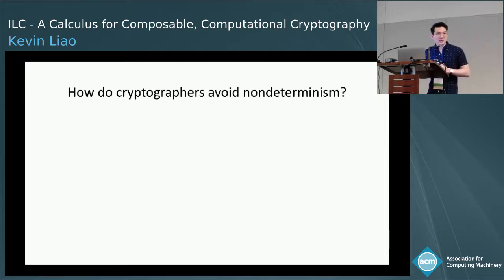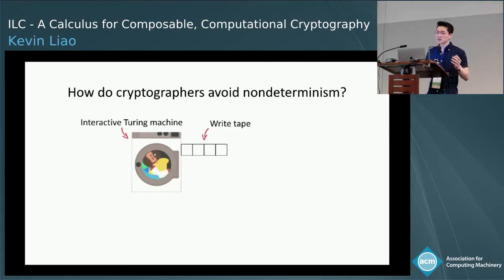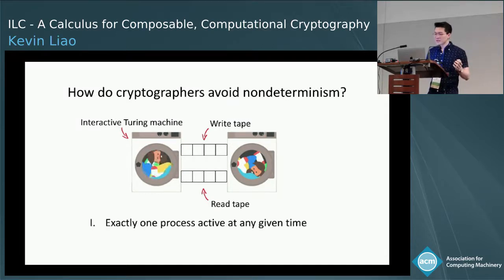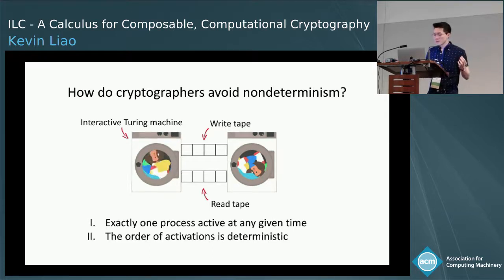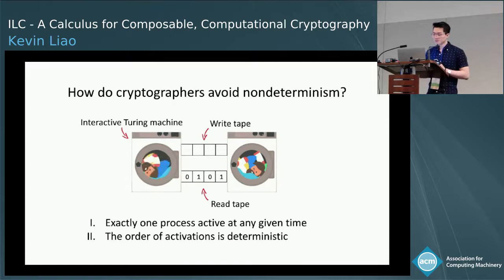The design of our type system is inspired by how cryptographers deal with this issue using interactive Turing machines. An ITM is a normal Turing machine with a write tape and a read tape, and we can hook it up to another ITM so they can communicate. In a system of ITMs, exactly one process is active at any given time, and the order of activations is deterministic. For example, the left ITM can write to activate the other ITM, which can write back so the left ITM regains activation.